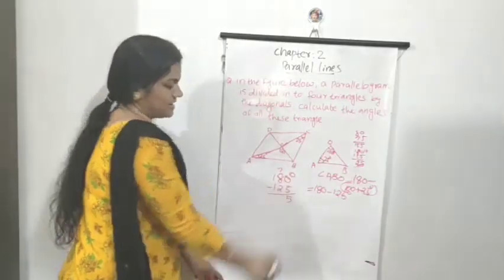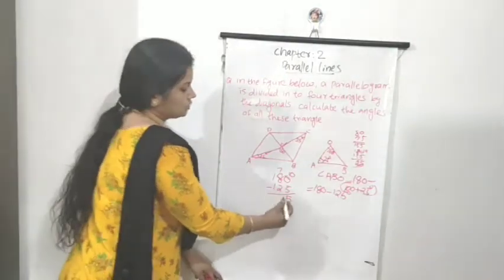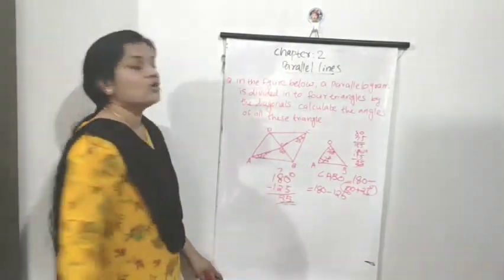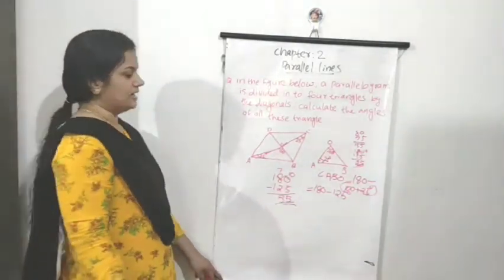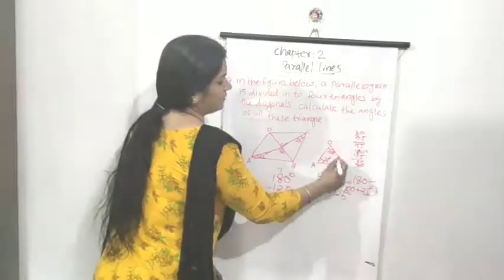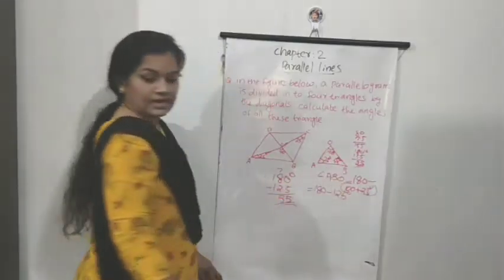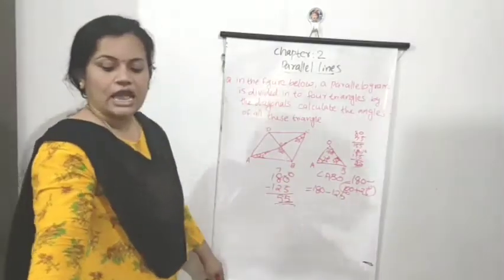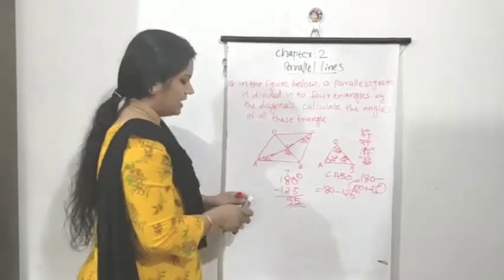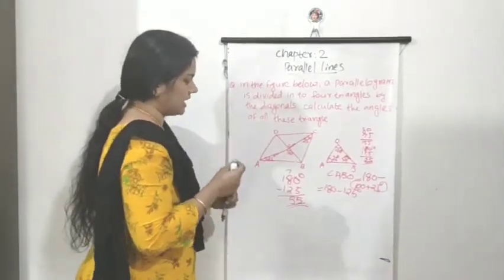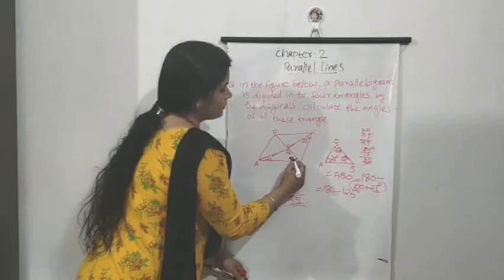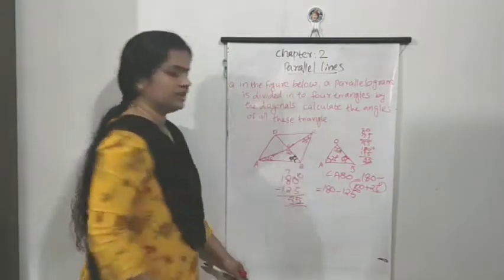180 minus 125 equals 55 degrees. So angle AOB is equal to 55 degrees. We can write this as 55 degrees on the figure.